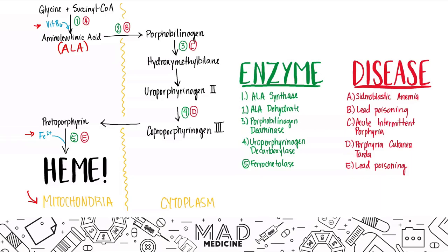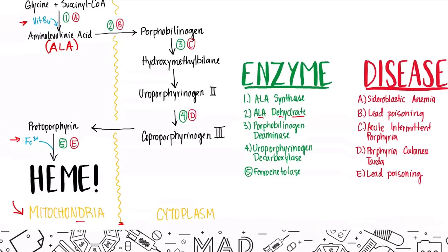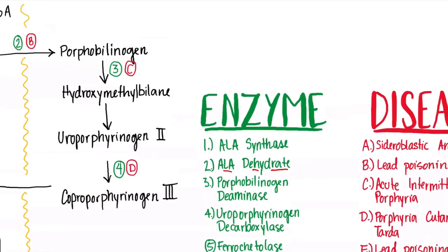Aminolevulinic acid, or ALA, then crosses the mitochondrial membrane into the cytoplasm. Once there, it's converted by the enzyme ALA dehydratase. ALA dehydratase converts ALA into porphobilinogen. So porphobilinogen is made via ALA dehydratase.